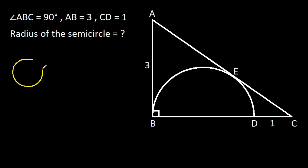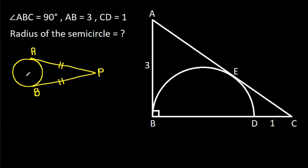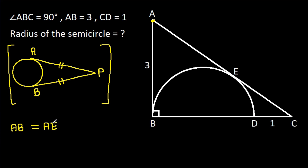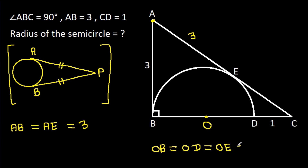In any circle, from any external point P, if we draw two tangents to the circle — suppose the points of tangency are A and B — then PA will be equal to PB. So, from point A, AB will be equal to AE, and since AB is 3, AE will also be 3. Suppose the centre of the semicircle is O; then OB, OD, and OE will all be equal to the radius.